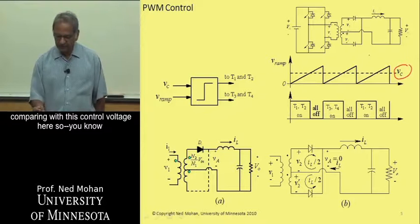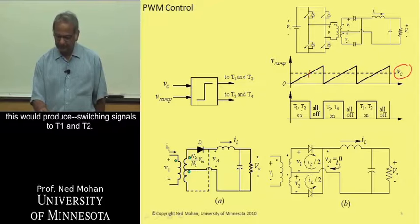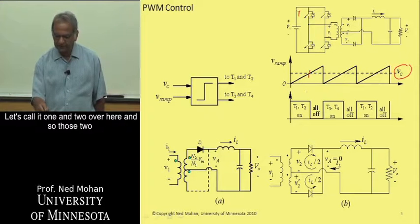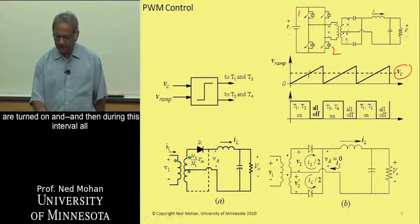So this would produce switching signals to T1 and T2. Let's call it 1 and 2 over here. And so those two are turned on.